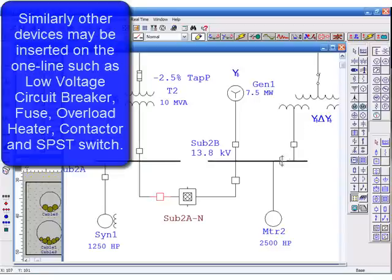Similarly, other devices may be inserted on the one line such as a low voltage circuit breaker, a fuse, overload heater, contractor, and single pole single throw switch.